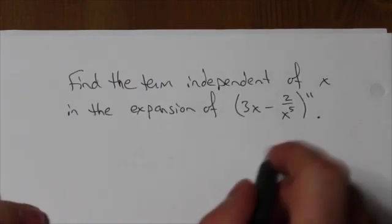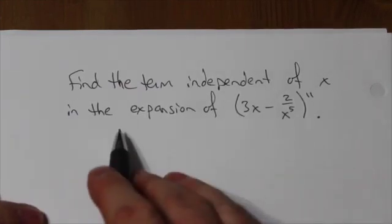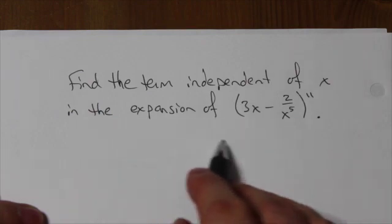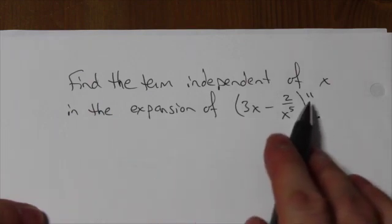Alright, hi everyone. Let's take a quick look at this problem. Find the term independent of x in the expansion of (3x - 2/x^5)^11.